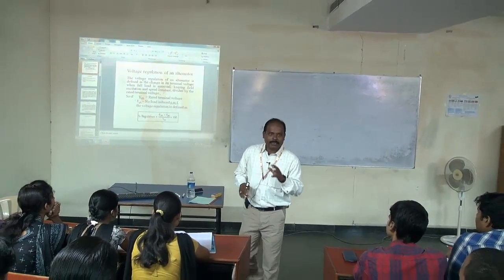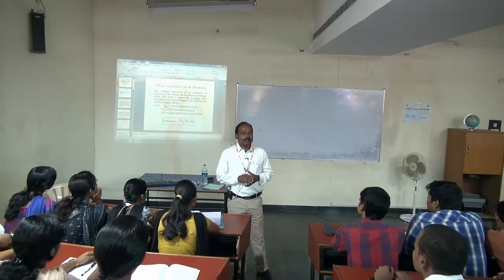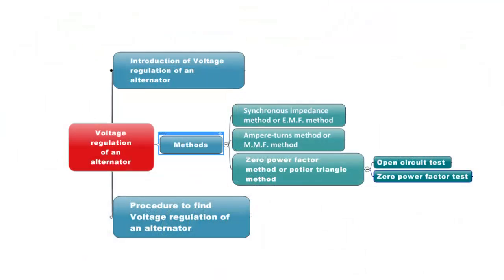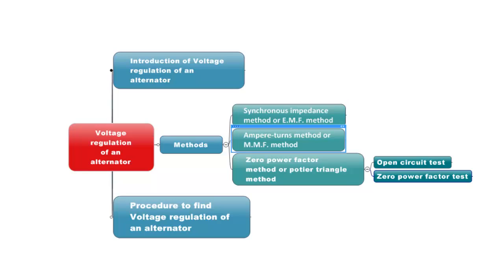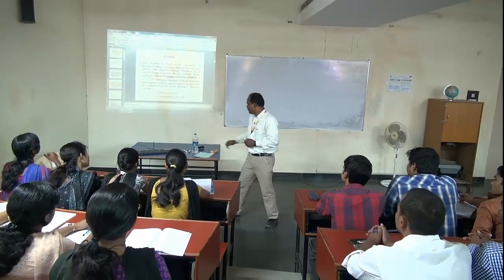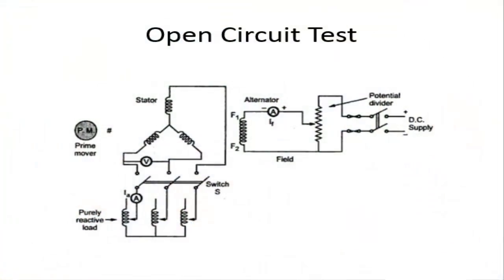The voltage regulation of an alternator can be determined by three methods: the first is the synchronous impedance method, the second is the ampere-turn method, and the third is the zero power factor method, also called the ZPF method. A circuit arrangement is used for these tests.